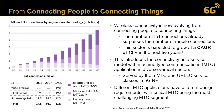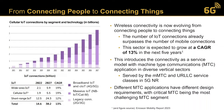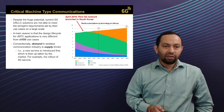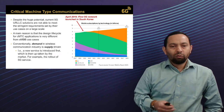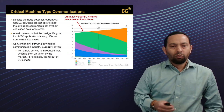Different MTC applications have different design requirements, with critical machine type communication being the most challenging MTC segment because of its stringent reliability and low latency requirements. Despite the huge potential of 5G URLLC, most current solutions are not able to meet these stringent requirements on a large scale, and we can see this from the quite slow adoption of 5G URLLC in the market. One of the main reasons is the design cycle of critical machine type communications, which is very different from what we have been used to in conventional EMBB use cases.